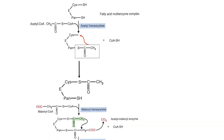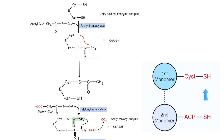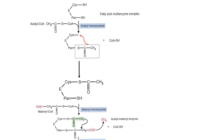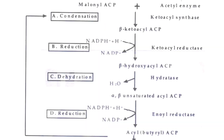The acetyl unit is then transferred from the ACP sulfhydryl group to the sulfhydryl group on the cysteine residue of beta-ketoacyl-ACP synthase. This transfer creates a vacant ACP, which now accepts the malonyl group from malonyl-CoA in a reaction catalyzed by malonyltransacylase. Now that both acetyl and malonyl groups are attached to the fatty acid synthase enzyme, the whole enzyme is called the acetyl-malonyl enzyme.